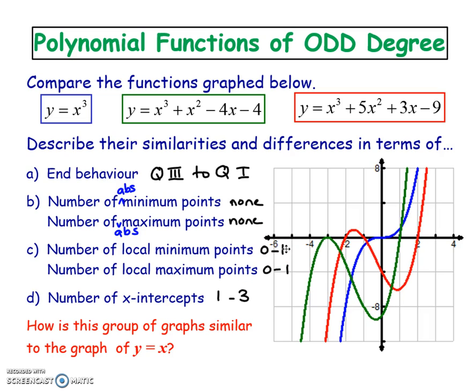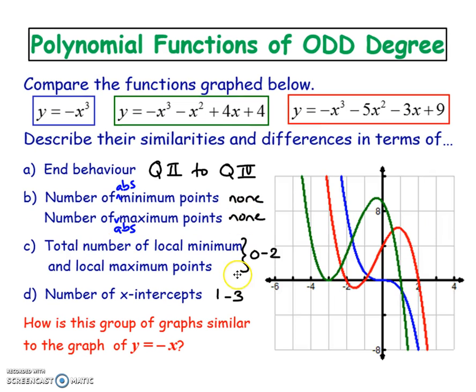In terms of x-intercepts, this blue one has one x-intercept, the green one has two x-intercepts, and the red one has three - one, two, and three - but that's the very max you'll ever get.